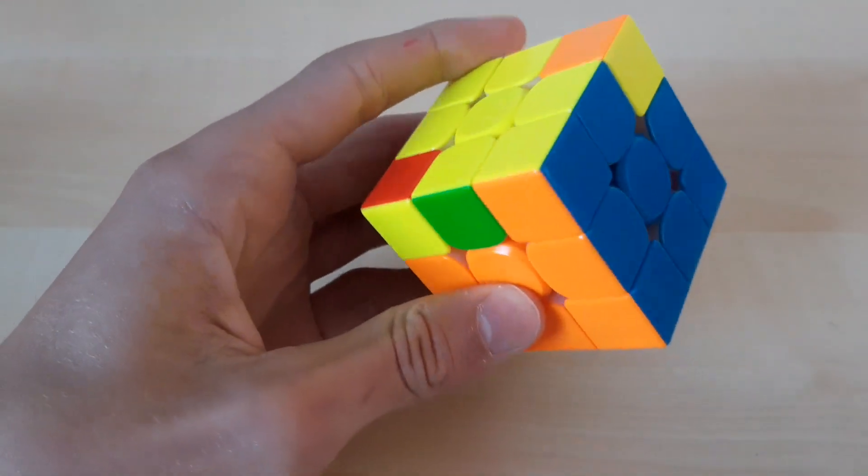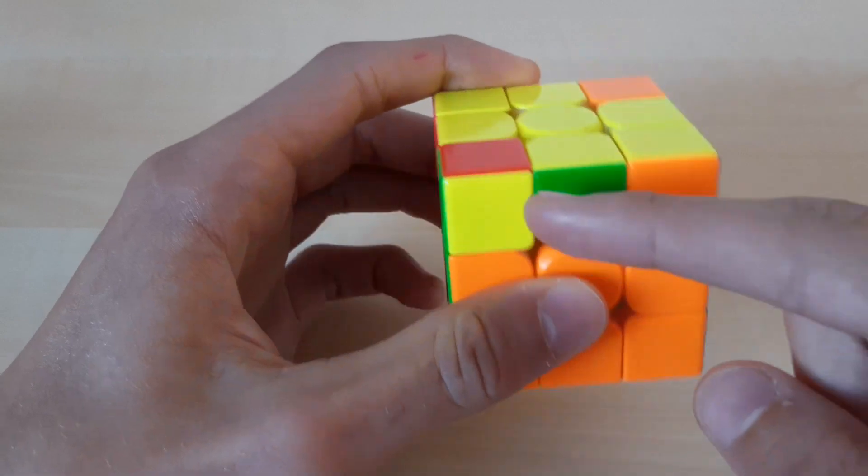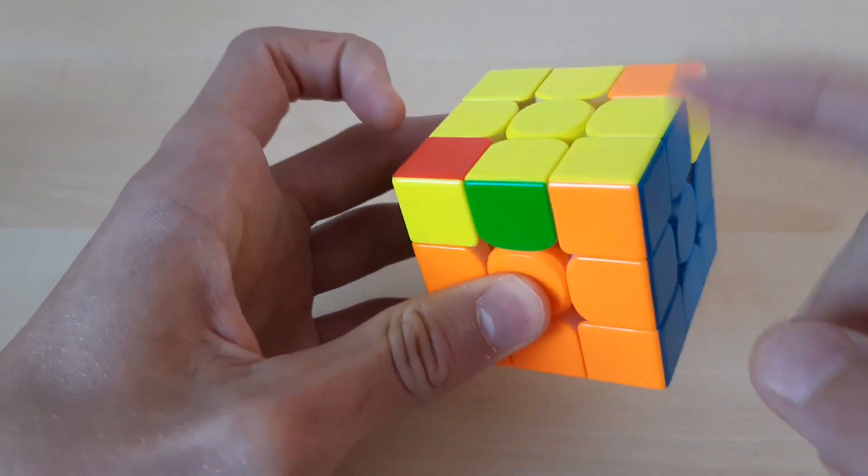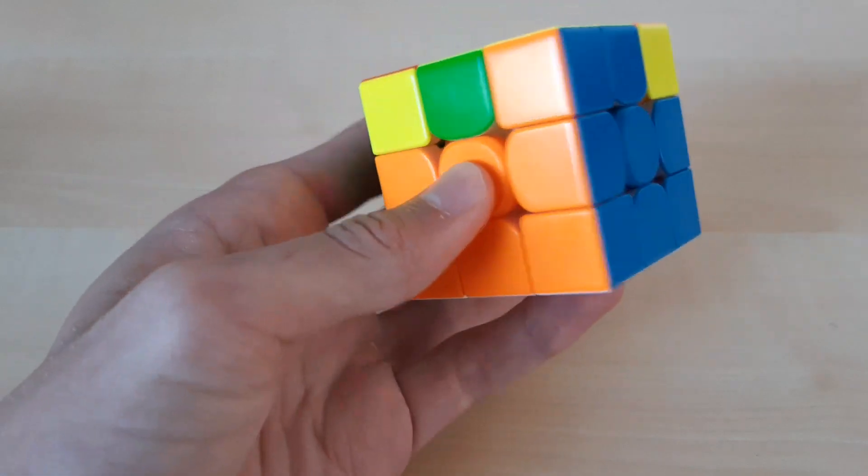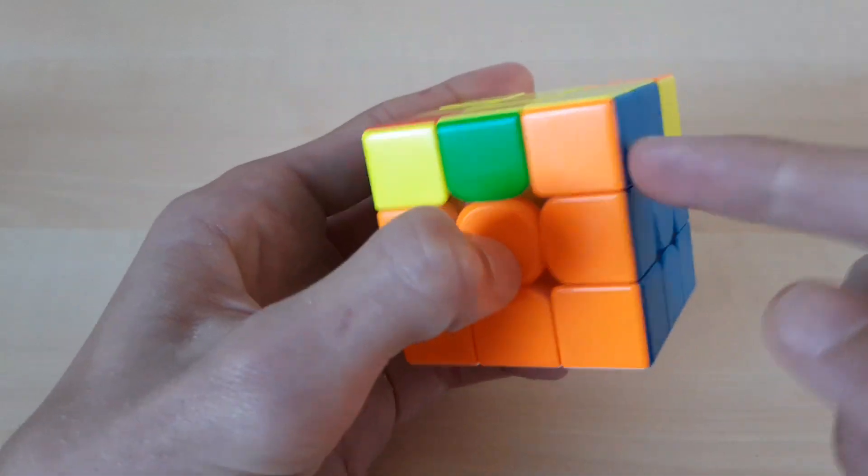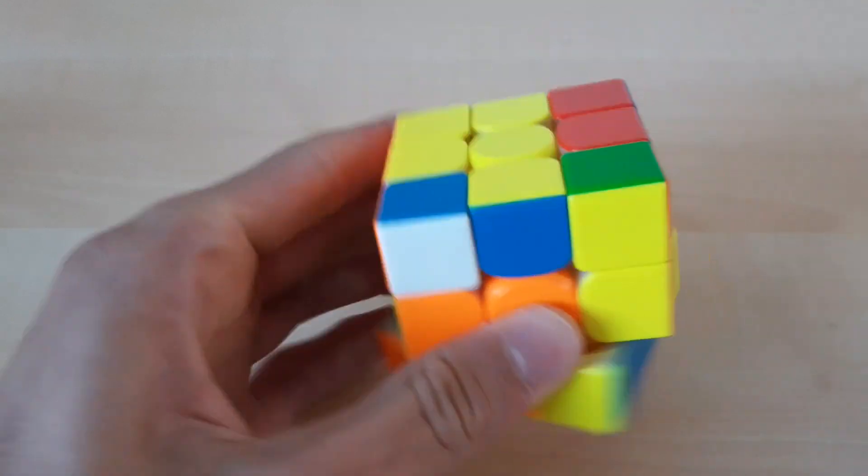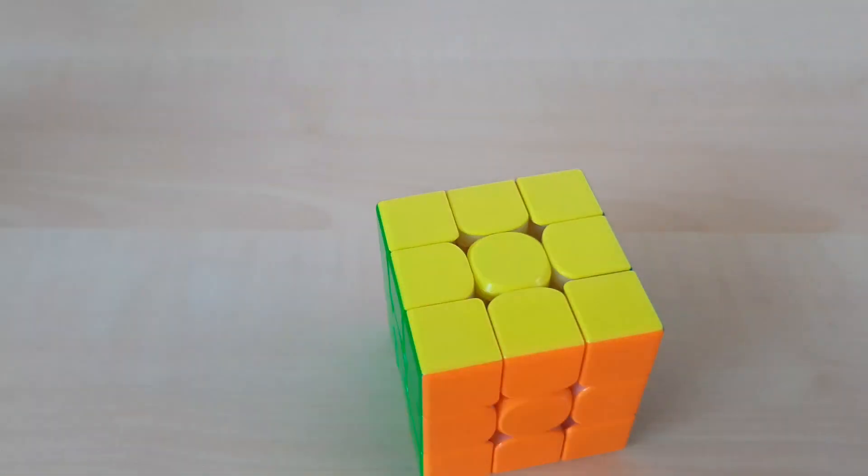And for this case, where the block is here and those two are adjacent and this is a weak block, for that one I know that the first few moves destroy this block. So, like that. And then, when you already know the beginning, then the rest of the algorithm is also easy to remember.